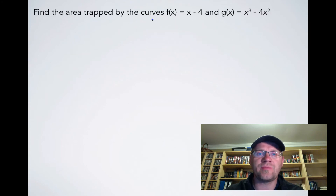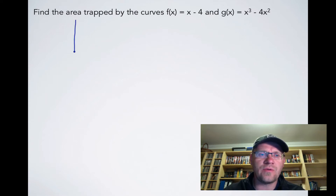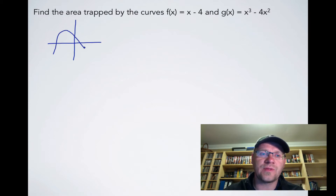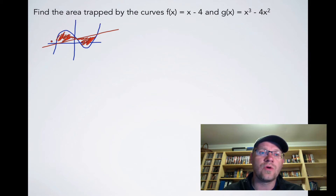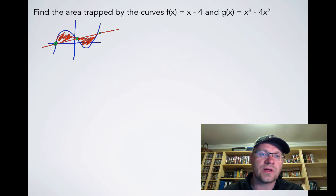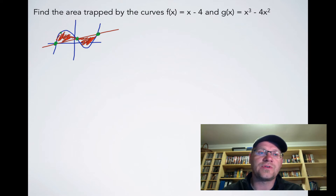The second example: find the area trapped by the curves f of x equals x minus 4 and g of x equals x cubed minus 4x squared. One is a line and one is a cubic graph. We sketch g of x as a cubic and f of x as a line, and we're looking for the area trapped between them. We first need to find where the two curves intersect.